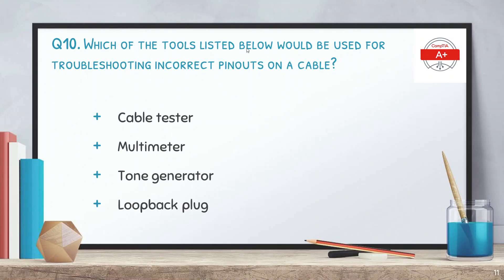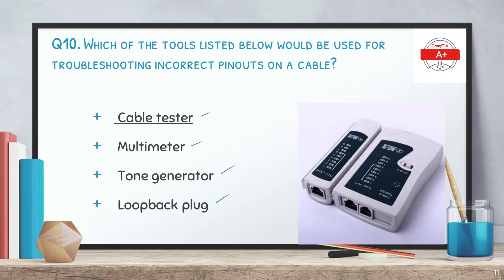Question 10: which of the tools listed below would be used for troubleshooting incorrect pinouts on a cable? Options are cable tester, multimeter, tone generator, and loopback plug. The correct answer is cable tester. You connect one side of the cable to the tester and the other end at the remote location, press the button, and LEDs indicate whether the cable is correctly connected — green for correct pinouts and red for a faulty one.